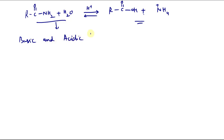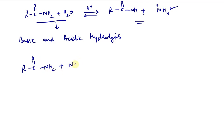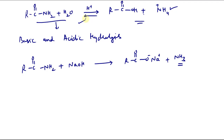Basic and acidic hydrolysis — in the first reaction I have given you the example of acidic hydrolysis. Under basic hydrolysis, if we have NaOH, what we get is a carboxylate anion — sodium carboxylate — plus ammonia is released. If we have a secondary amide, then we will get some amine. So this is your basic hydrolysis and this is your acidic hydrolysis.